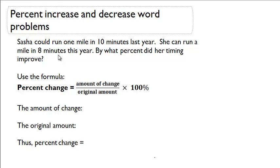Sasha could run one mile in ten minutes last year. She can now run a mile in eight minutes this year. By what percent did her timing improve?